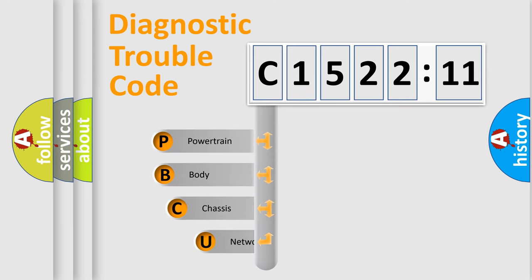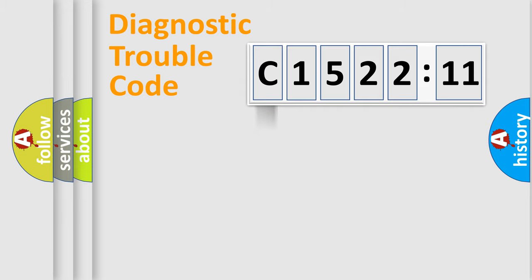First, let's look at the history of diagnostic fault code composition according to the OBD2 protocol, which is unified for all automakers since 2000. We divide the electric system of automobile into four basic units.